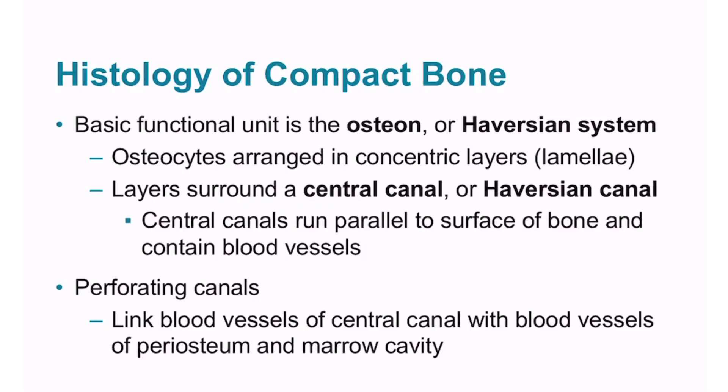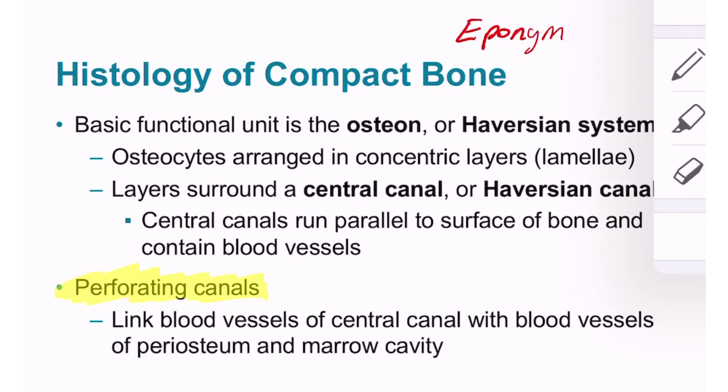The basic functional unit of compact bone is called an osteon, traditionally called the Haversian system — an eponym named after the scientist who discovered it. Within a Haversian system, or osteon, osteocytes are arranged in concentric layers called lamellae surrounding a central canal, or Haversian canal. Central canals run parallel to the surface of the bone and contain blood vessels. Penetrating from the central canal perpendicular to the osteon are perforating canals, sometimes called Volkman's canals — another eponym.